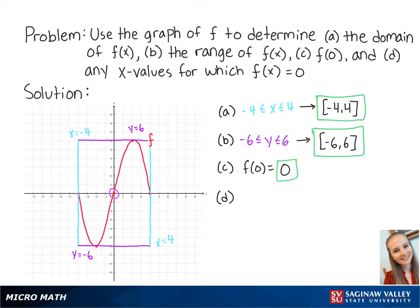For letter d, we want to find any x values for which f of x equals 0. Looking at the graph, we can see that when y is equal to 0, x is negative 4, 0, and positive 4. So the answer for letter d is that x equals negative 4, 0, and 4. These are the final answers.